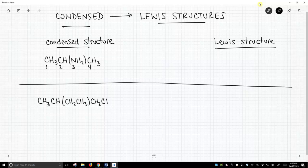So for the Lewis structure, carbon one is attached to three hydrogens, and then carbon one is attached to carbon two, and carbon two is also attached to a hydrogen, and then we run into these parentheses.